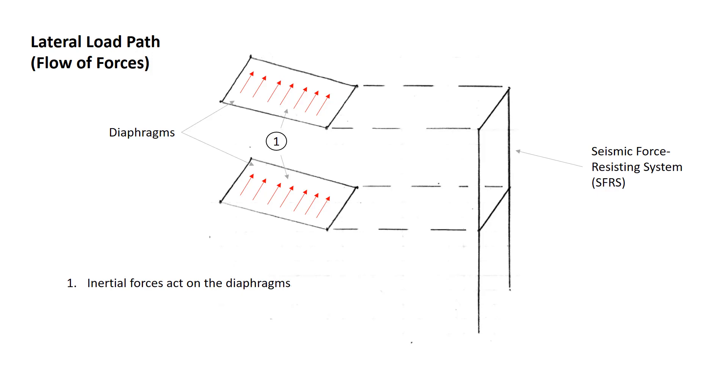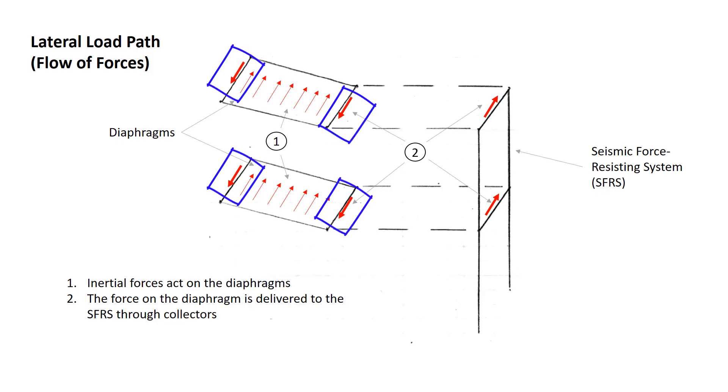Once we've generated this force, the diaphragm itself needs to develop a reaction wherever it's connected to a seismic force-resisting system. In this simple example, that's at either end of the diaphragm. What we're showing here in single, thicker arrows is the force that's generated at the edge of the diaphragm to resist the inertial forces in the diaphragm. On the right-hand side, we're also showing the equal and opposite reaction that the diaphragm causes on the seismic force-resisting system.